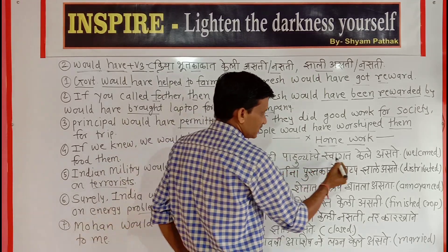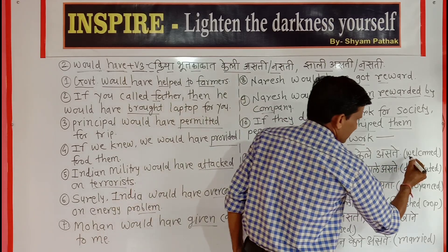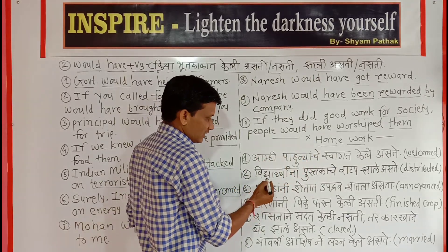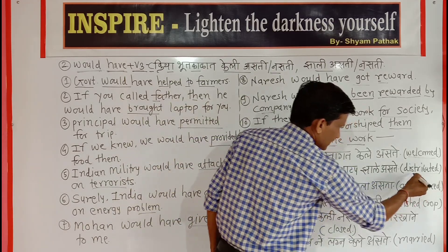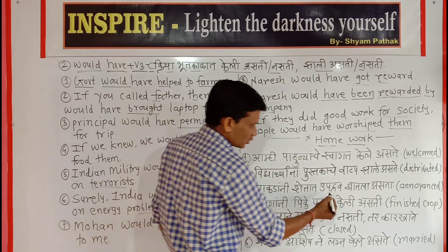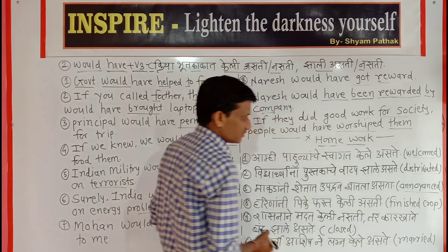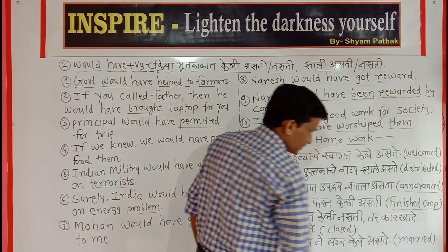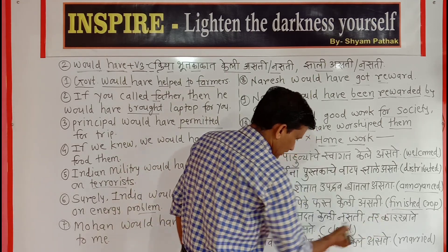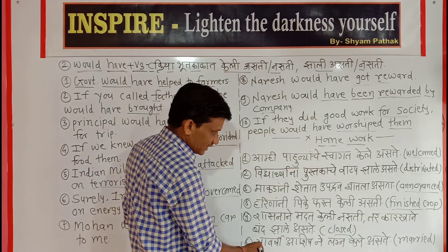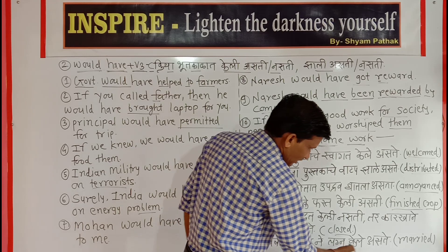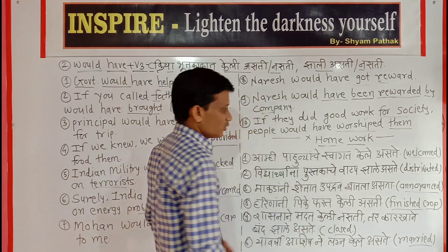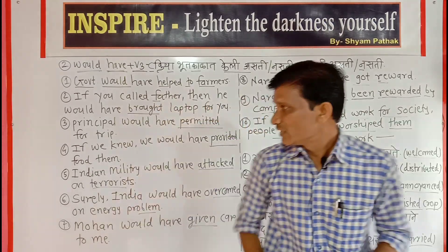Homework sentences to convert into English: First — 'Amhi pahuncheya swagat kela ashtra' (We would have welcomed the guests). Second — 'Pushtak anche vatap jhalya ashtet' (Books would have been distributed). Third — 'Makadani shetat uppadrao ghatla ashtta' (Monkeys would have caused annoyance/crop damage in the fields). Fourth — 'Shasna nye madad kelin ashti tar karkhan band ashtet' (If the government had not helped, the factory would have been closed). Fifth — 'Aashish ne lagna kelin ashtet' (Aashish would have got married). Now you have to turn all of these into English.